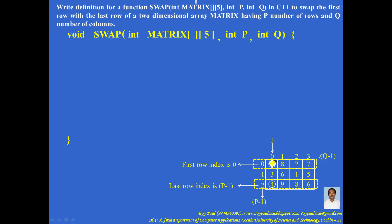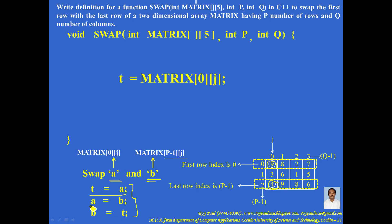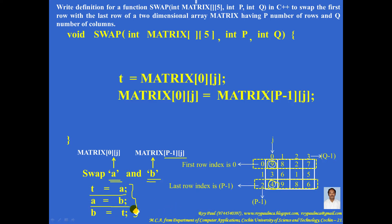So, if you want to swap matrix[0][j] and matrix[p-1][j], the code to swap A and B that we have studied can be applied here. A should be replaced with matrix[0][j] and B should be replaced with matrix[p-1][j]. So it becomes: t = matrix[0][j]; matrix[0][j] = matrix[p-1][j]; matrix[p-1][j] = t.